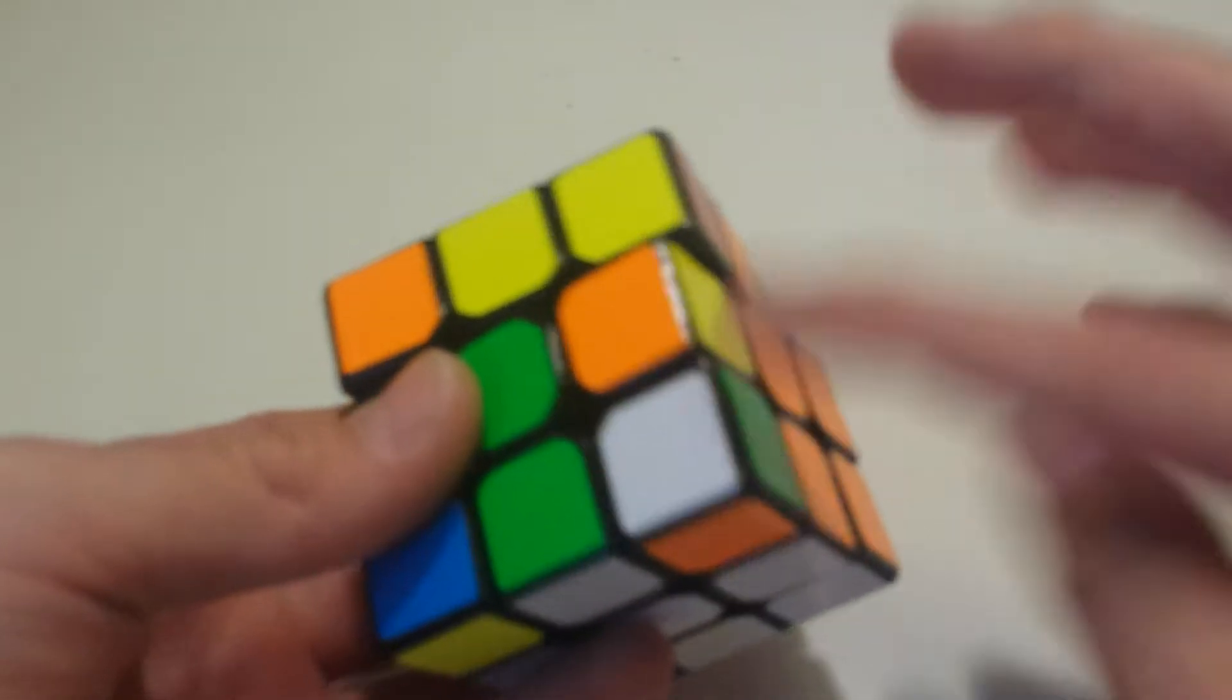Then I did F2 to put this piece in. And then I rotated it and then I saw this pair like this. I just did the cross.